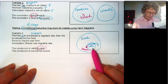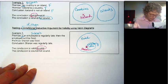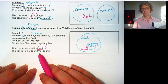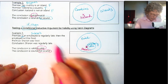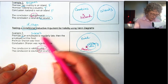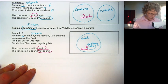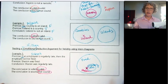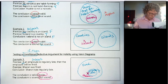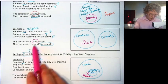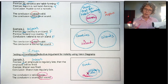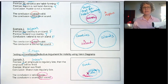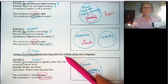If the X had been inside the regularly late circle, it would be a valid argument. But if it's invalid, can it be sound? No — there's no way an invalid argument can be sound. It doesn't matter if the premises are true or false; we can't conclude she was regularly late from these two statements. So that gives us three examples: one that's valid and sound, one that's valid but not sound, and one that's invalid and not sound.